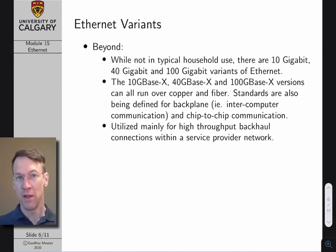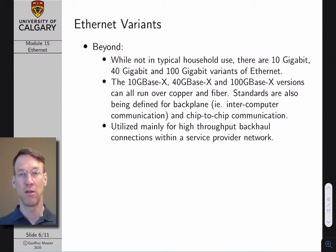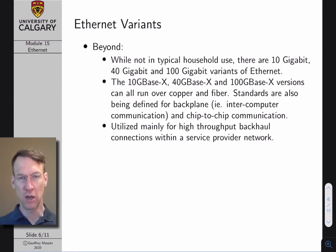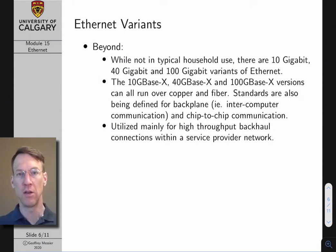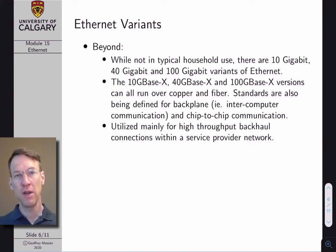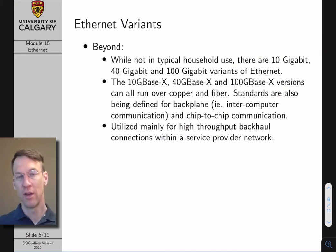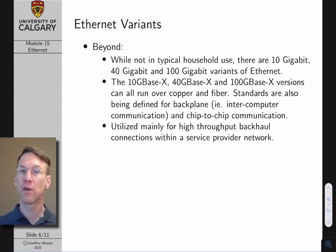Going beyond Gigabit: at the time of recording, while not in typical household use, there are 10 Gigabit, 40 Gigabit, and 100 Gigabit Ethernet variations. These tend to be used for high-throughput backhaul links — for example, connecting large buildings on campus or connecting large company networks to a service provider's broader Internet. They run over both copper and fiber. Interestingly, Ethernet standards are also moving beyond traditional computer networks into research applications such as on-chip communication and chip-to-chip communication.